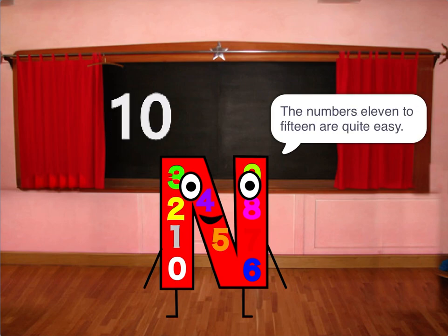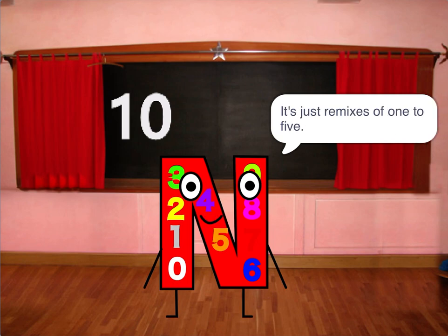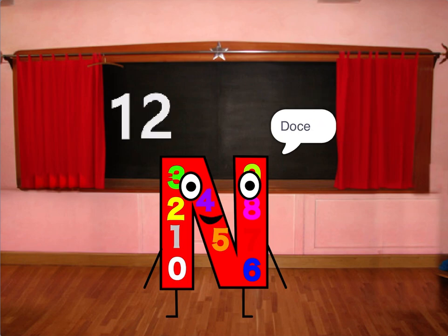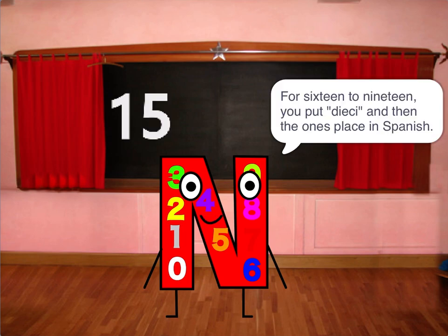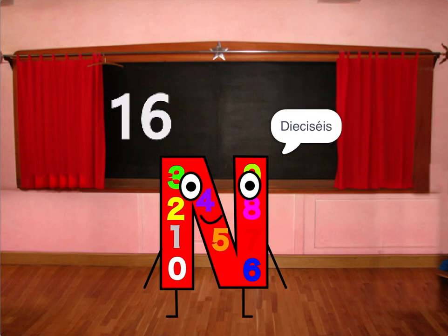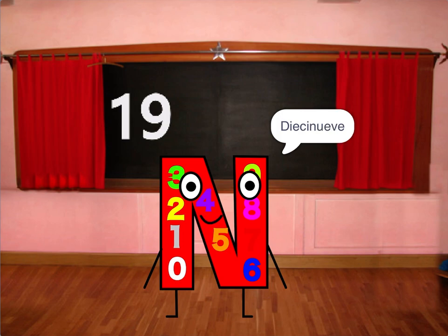The numbers 11 to 15 are quite easy — they're just remixes of 1 to 5: 11, 12, 13, 14, 15. For 16 to 19, you put the word for 10 and then the ones place in Spanish: 16, 17, 18, 19.